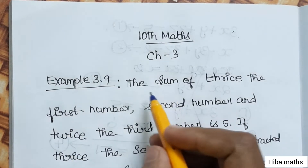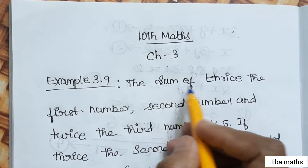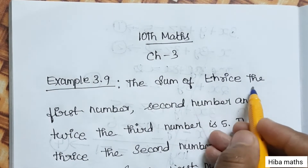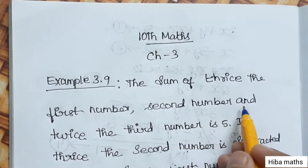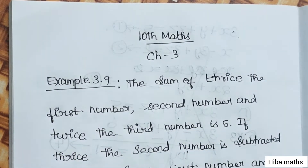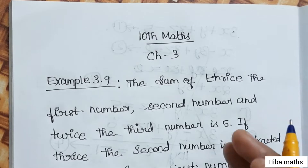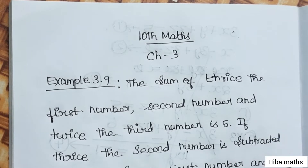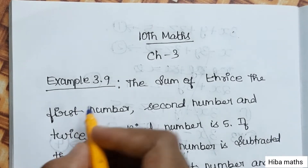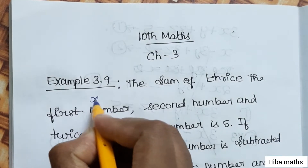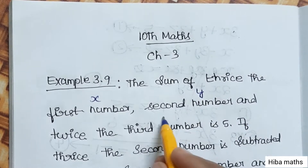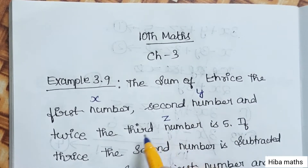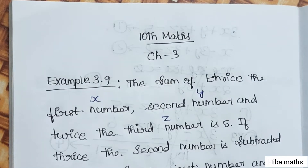Example 3.9: The sum of thrice the first number, second number and twice the third number. Let the first number be X, second number be Y, and third number be Z.